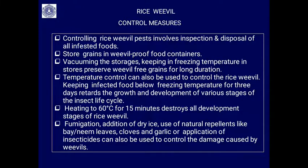Temperature control is effective: keeping infested food below freezing for three days retards development. Heating to 60 degrees Celsius for 15 minutes destroys all development stages of the rice weevil. Fumigation, addition of dry ice, and use of natural repellents like dry bay leaves, neem leaves, cloves, garlic, and ginger are also helpful. Mild insecticides may also be used in stores to control the infestation.